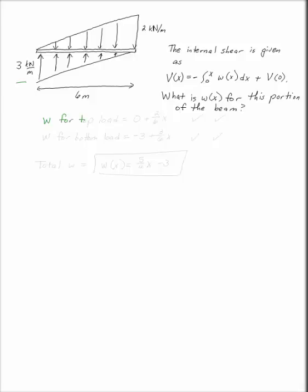So w for the top load has to be equal to its intercept, 0, plus the slope of the line. Slope of the line is positive, rises 2 over 6, x.